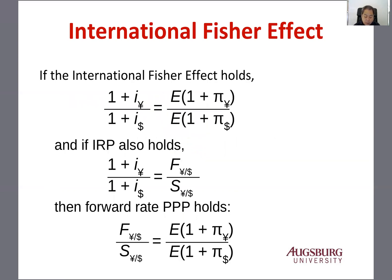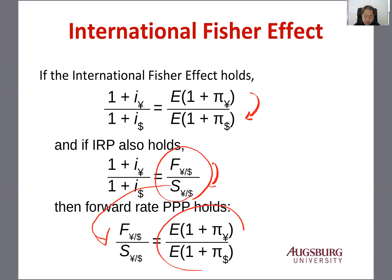If the International Fisher Effect holds and interest rate parity holds, then you can calculate the forward rate. The forward rate divided by the spot rate should simply equal expected 1 plus inflation of Japan divided by expected 1 plus inflation in the United States.